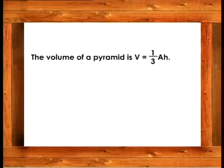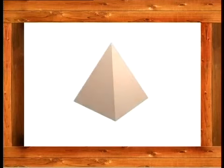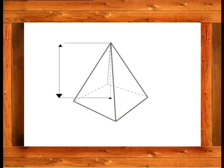The volume of a pyramid is V = (1/3)AH. By making H the subject of the formula, we get H = 3V/A. Thus, the height of a pyramid can be calculated if V and A are given.